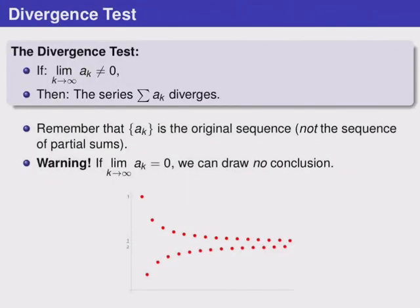With that in mind, let's look at our first test, the divergence test. In this case, if the limit of the a_k's is not equal to zero, then the series where we sum the a_k's diverges. Remember here that the sequence a_k is the original sequence that we're adding together. This is not the same thing as a sequence of partial sums.